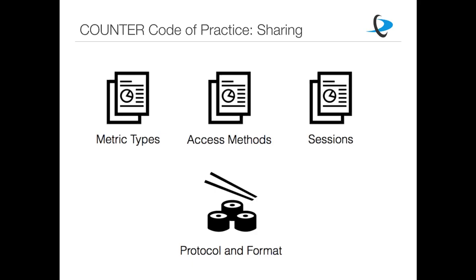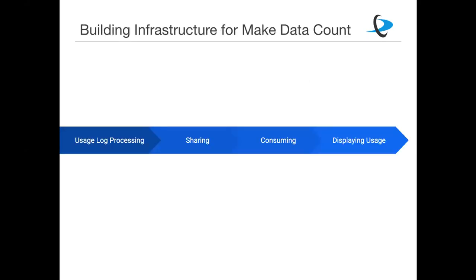Once you've read the Code of Practice you're ready to implement it. There are four steps in the infrastructure built for Make Data Count. The first is processing usage logs, which is mostly what the bulk of the Code of Practice covers. The second is sharing those usage reports. The third and fourth steps are about consuming and displaying that usage data, and we have built infrastructure in each of those areas.